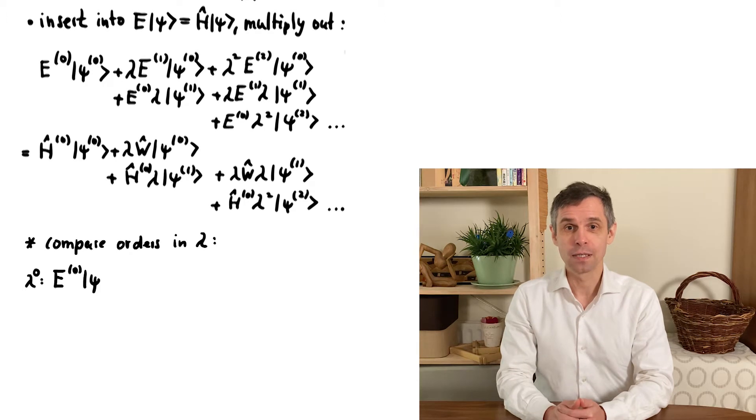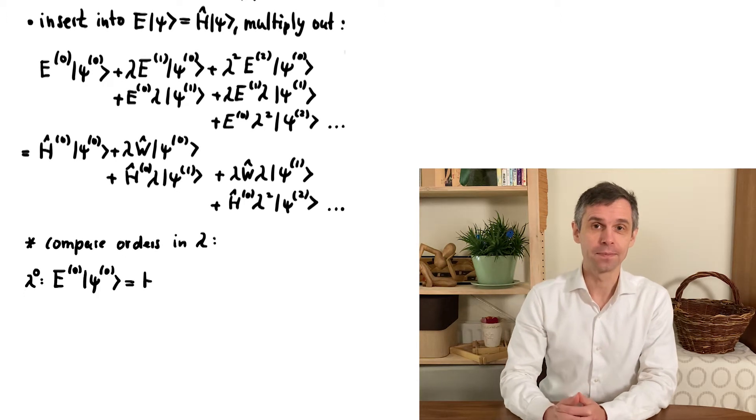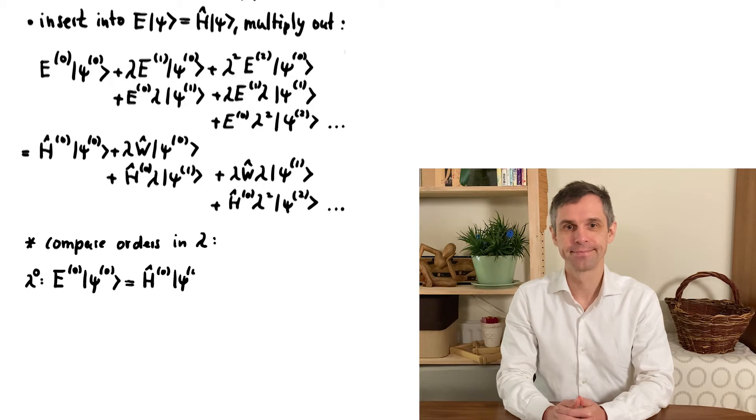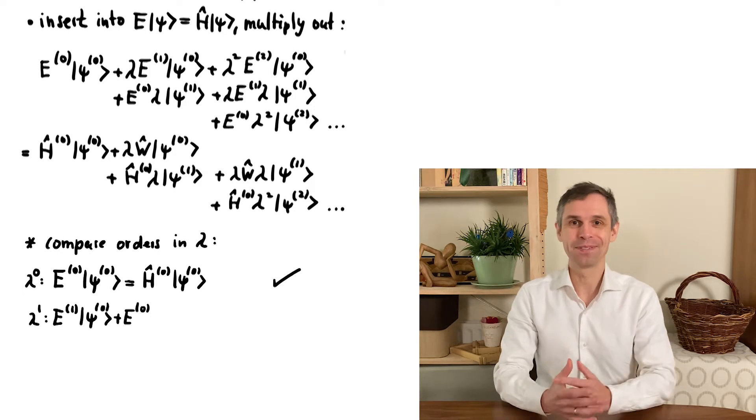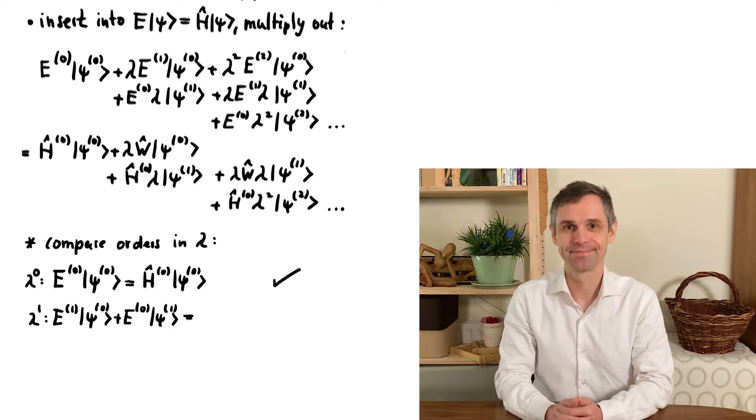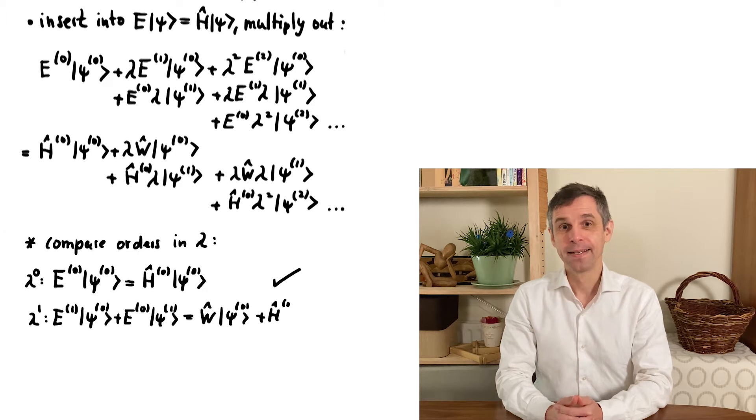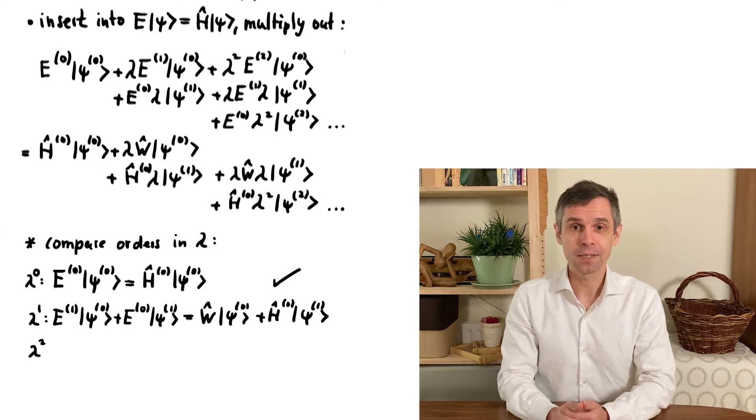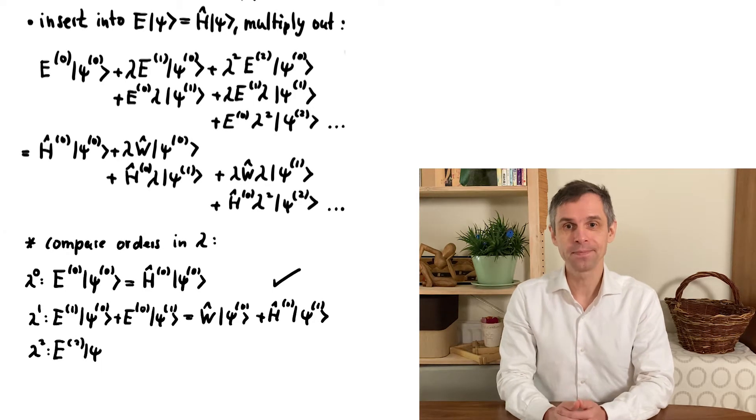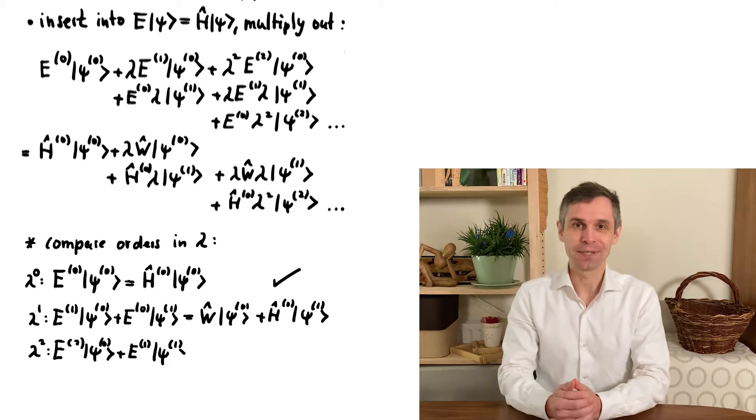This gives us an equation for each order in lambda. In the zeroth order we simply recover the Schrödinger equation for the original quantum system. In the other orders we get relations between the states and energies of the original and the perturbed system. I list these here again up to second order.